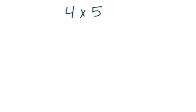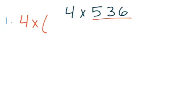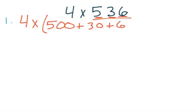Here is our problem. Let's take a look at four times five hundred thirty-six. Our first step tells us that we have to expand. We're going to expand our number five hundred thirty-six. So we have four — our four stays the same — times, and we're expanding five hundred thirty-six to five hundred plus thirty plus six. We have the value of our five, the value of our three, and the value of our six. We used expanded form.